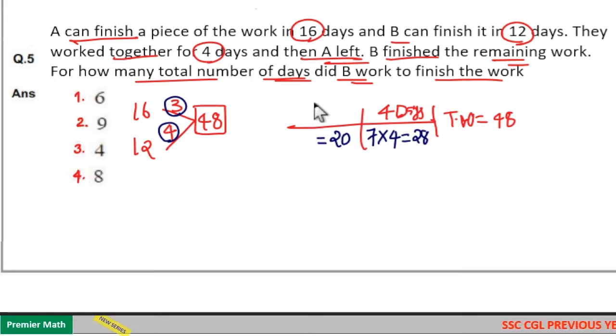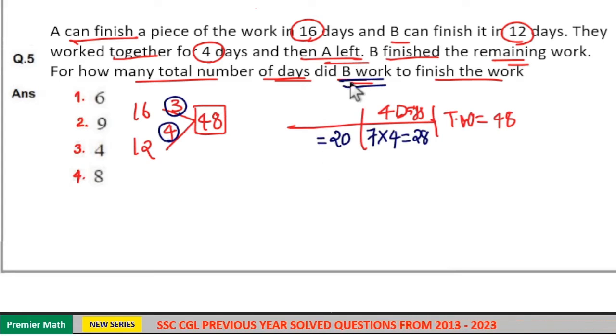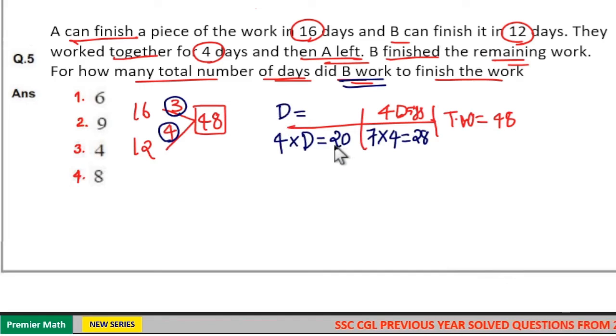This will finish by B. So this 20 units will finish in D days. And in 1 day B can finish 4 units of work. So in D days he will finish 20 units of work. So number of days taken to finish 20 units equals 20 by 4, 5 days.